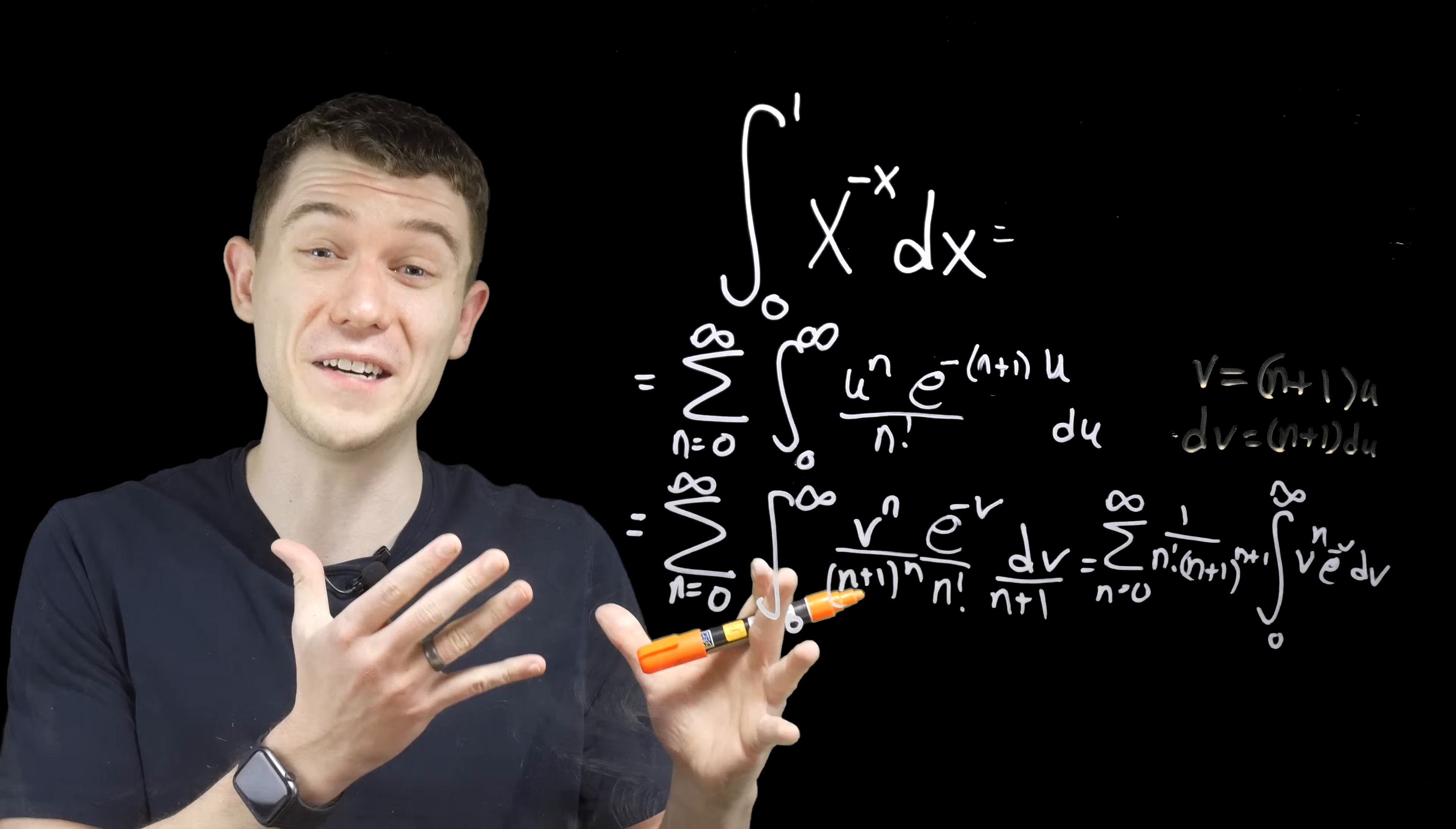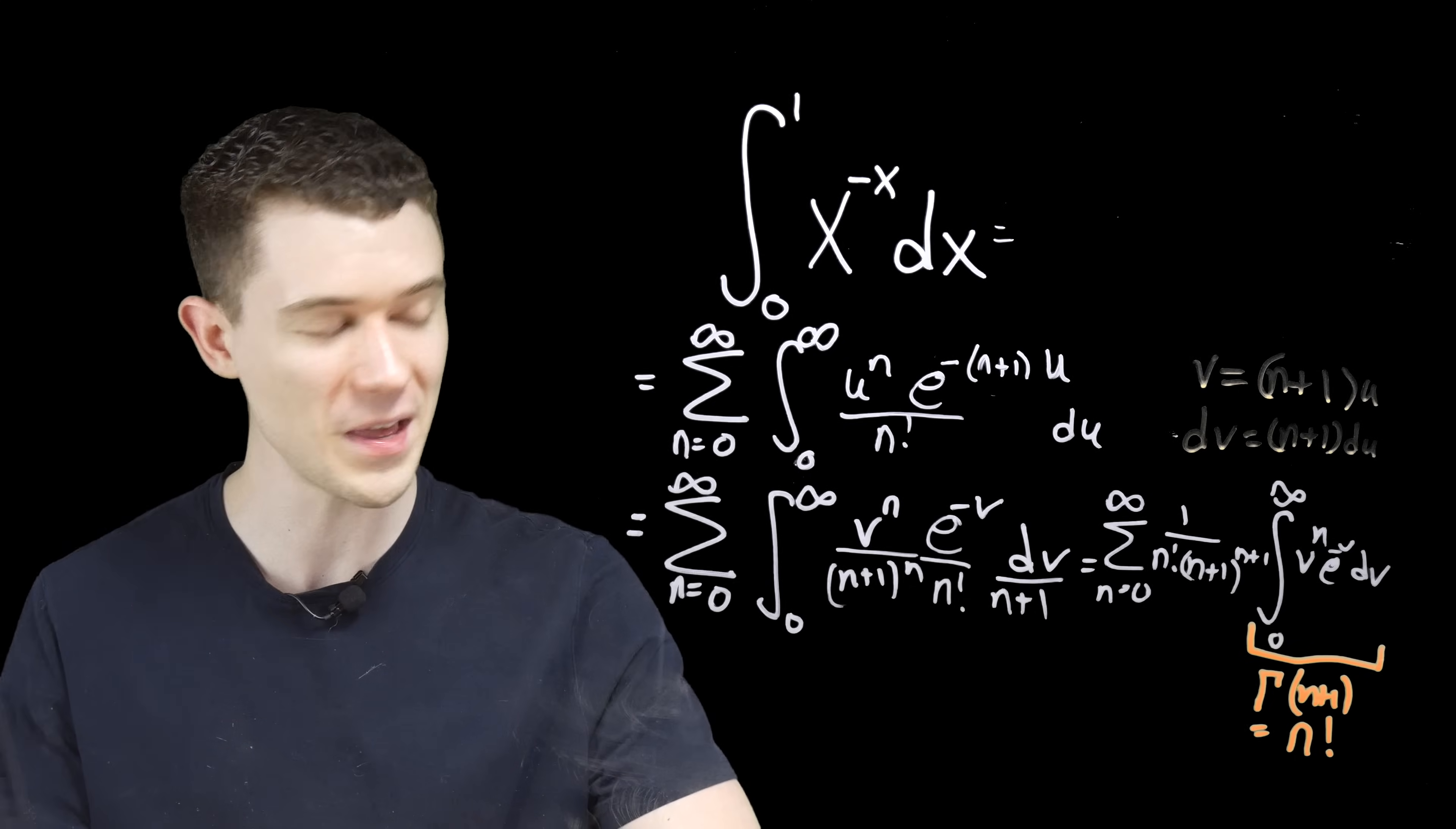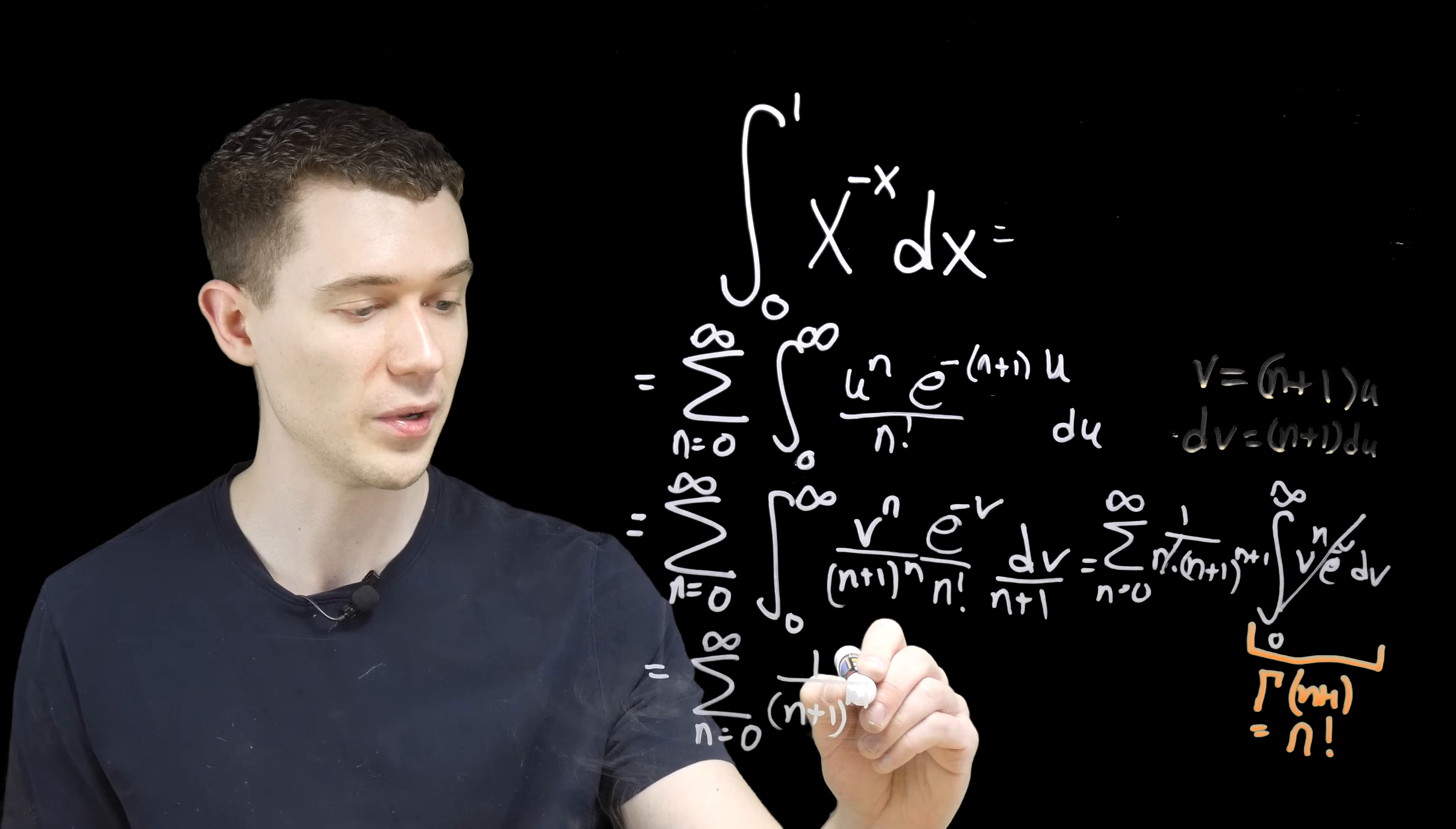And so finally, another piece of magic. What is this integral? Astute mathematicians might recognize this as the gamma function, the generalized factorial function. This actually is gamma of n plus 1, which is equal to n factorial. So we'll just slip that piece of knowledge in here that that entire integral becomes n factorial. And so what a great thing going on here that this n factorial cancels with this n factorial.